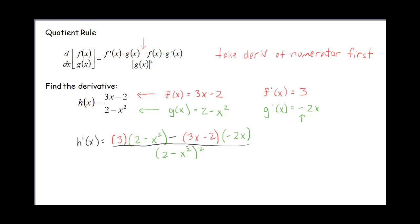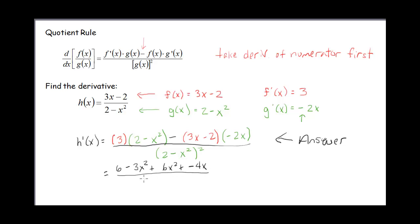You could simplify this, and your answer could be what we have right here — I'm perfectly happy with this. But let's go ahead and multiply it out. So we get 6 minus 3x squared. Here I have a minus and a minus, so that's going to be plus. 2x times 3x is 6x squared, and then this is going to be minus 4x, because I've got three negatives for that one. All over — I'm going to leave this as (2 minus x squared) squared. Collecting like terms: 3x squared minus 4x plus 6, over (2 minus x squared) squared.